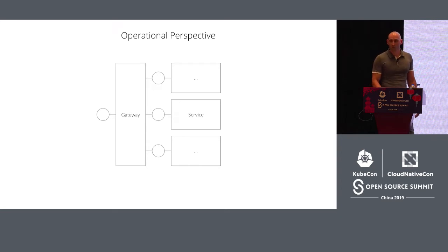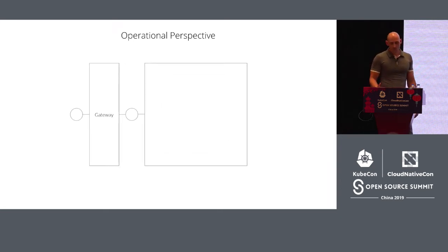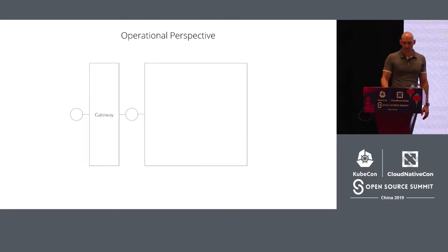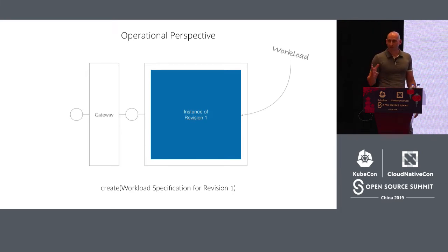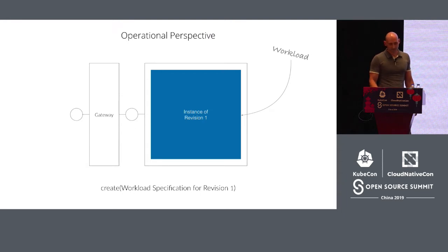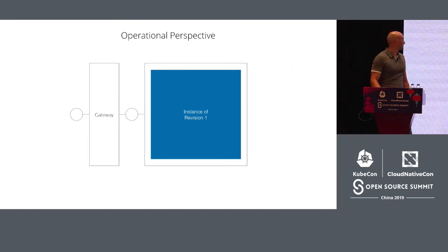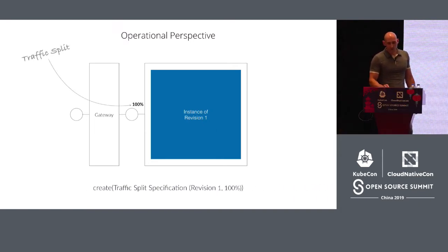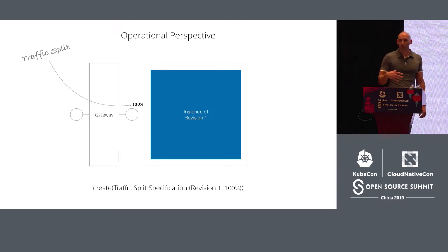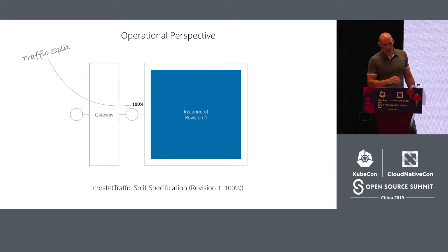In order to release the initial revision of a service, you have to perform two steps. First, you have to deploy the revision. To deploy a revision, you have to create a workload specification — a set of resources that specify how to process requests. If you're thinking workload specification sounds like pod specification, in essence, you are correct. Second, you have to roll out the revision. To roll out the revision, you have to create a traffic split specification — a set of resources that specify how to route requests. If you're thinking traffic split specification sounds like ingress specification, again, in essence, you are correct.